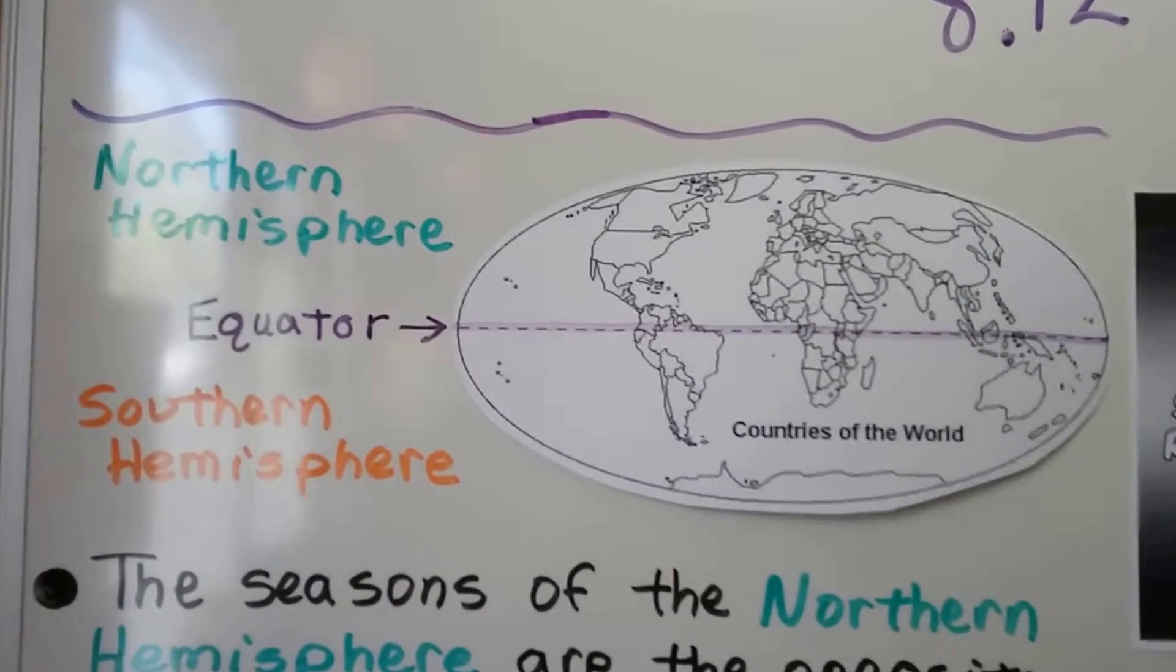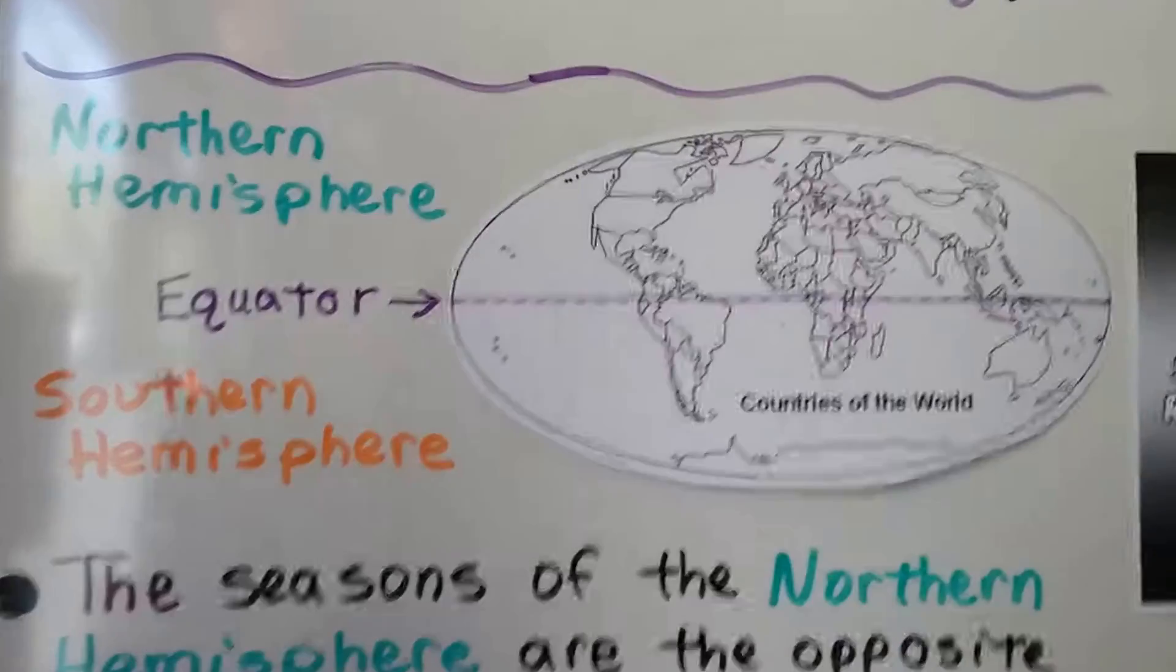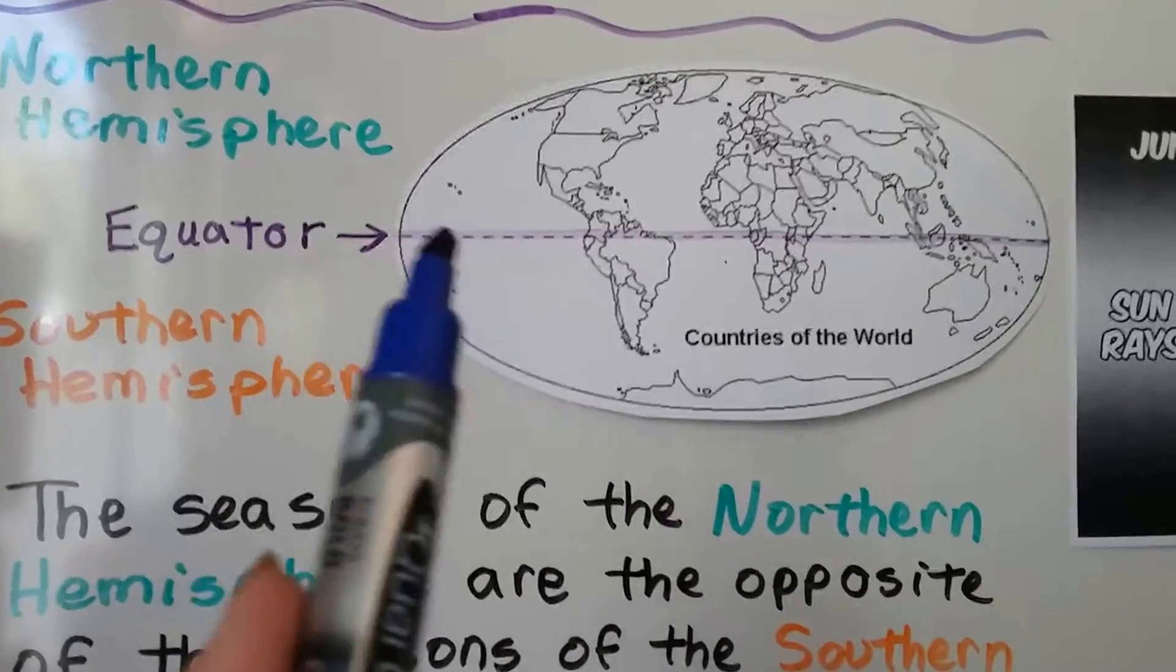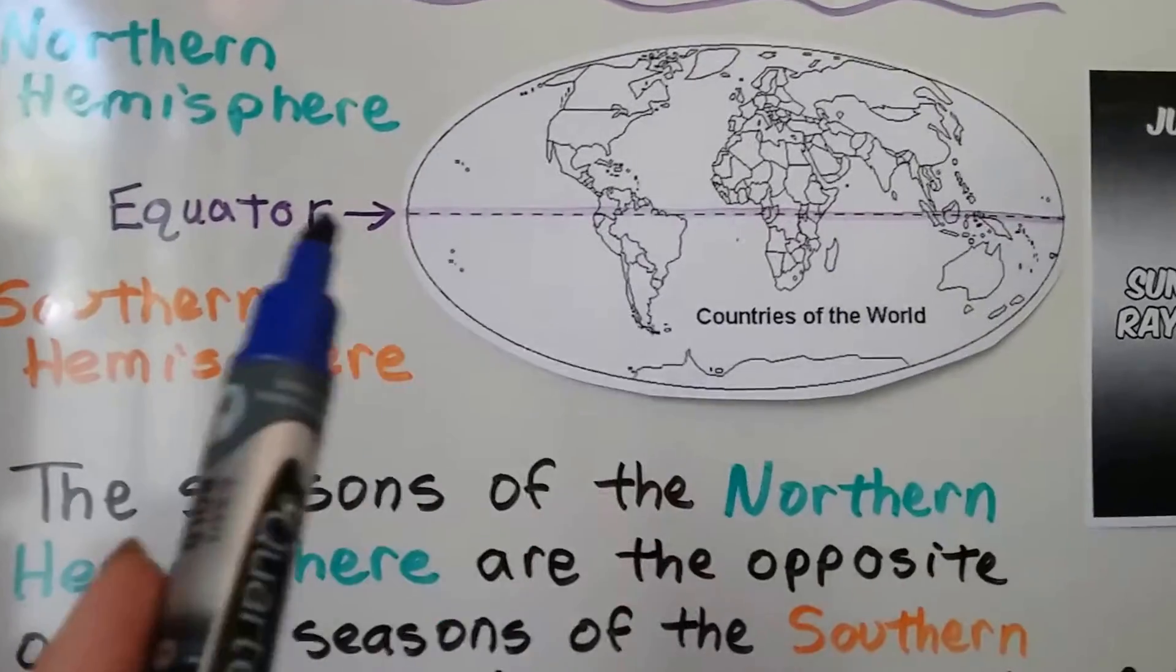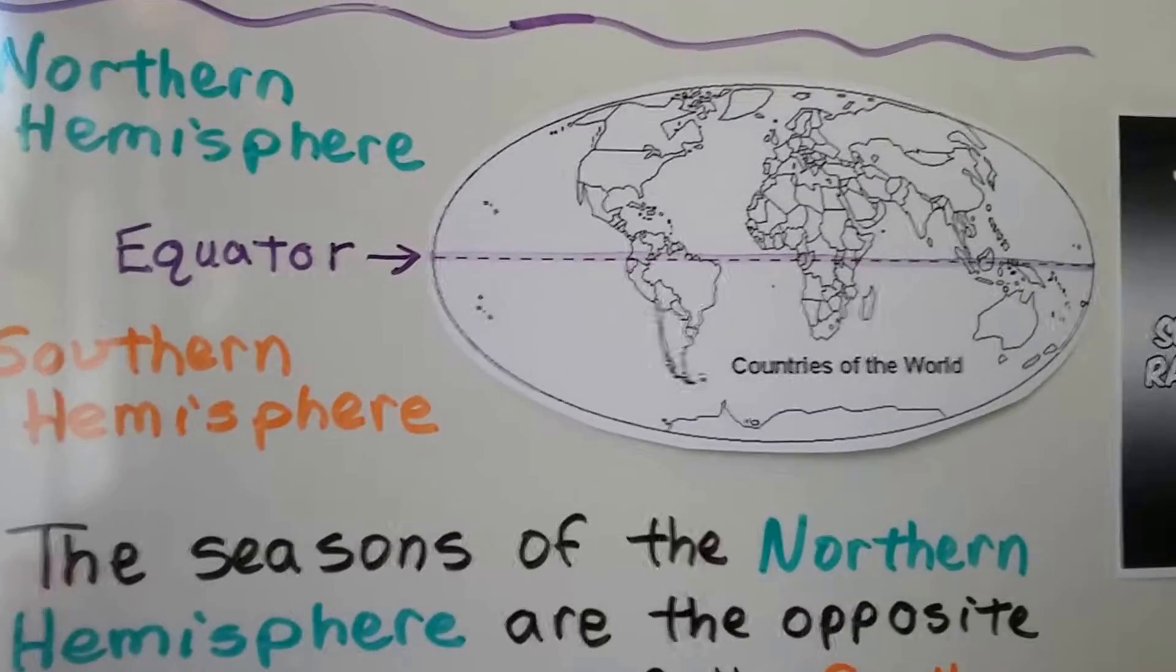The world is split into two parts: a northern hemisphere, that's up here, and the southern hemisphere, that's down here. They're split by a line called the equator. See that, the northern hemisphere and the southern hemisphere.